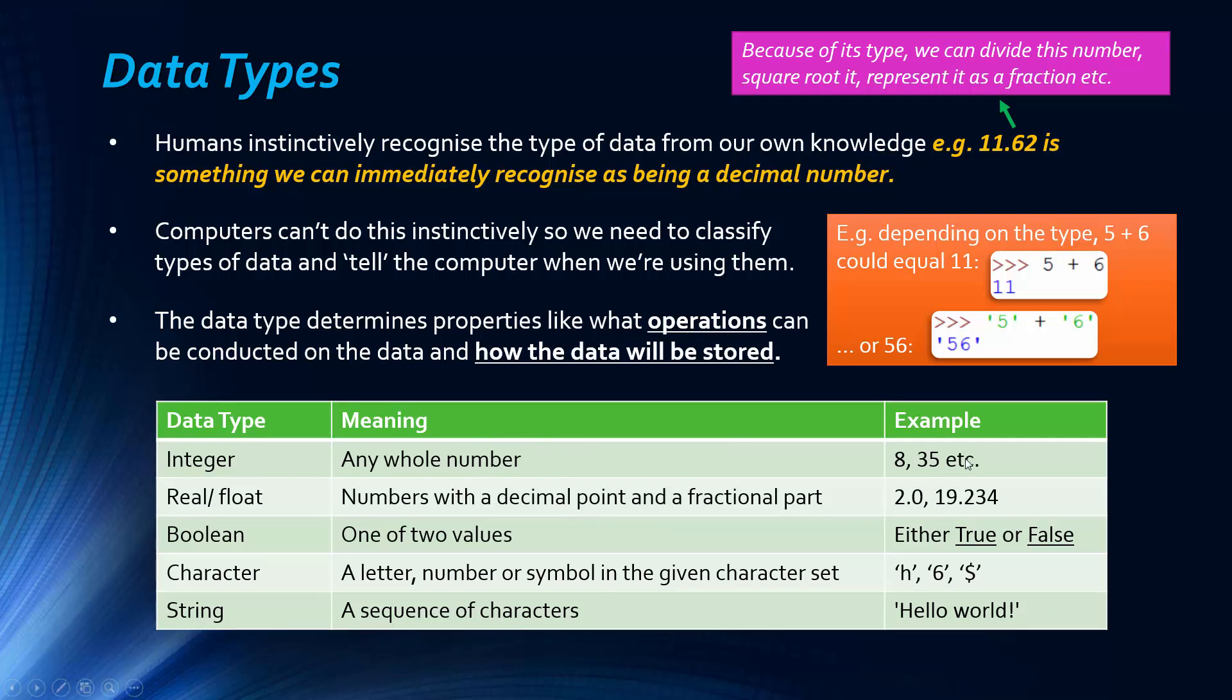You need to know five data types for your exam. These are the five data types that are going to be built in at a minimum to every programming language. An integer is any whole number like 8, 35, 9 - the list goes on. The second one is real or a float, which are two different terms for the same data type. I usually say float but it doesn't matter. These are numbers with a decimal part - they're not a whole number.